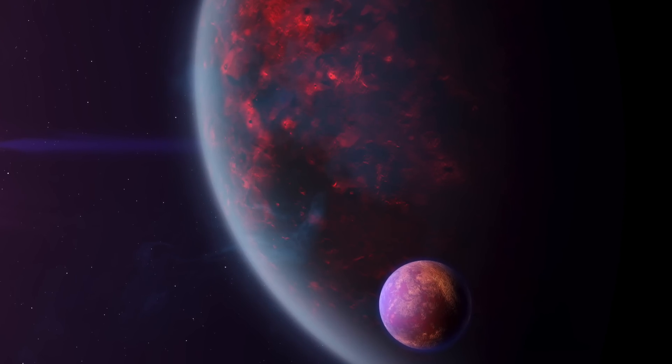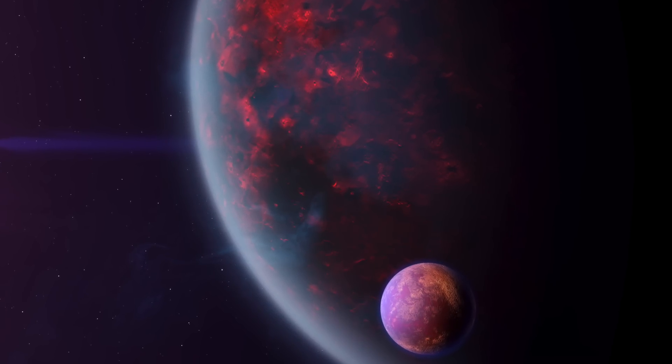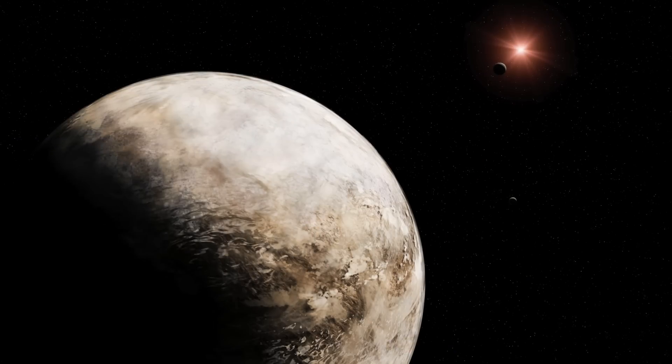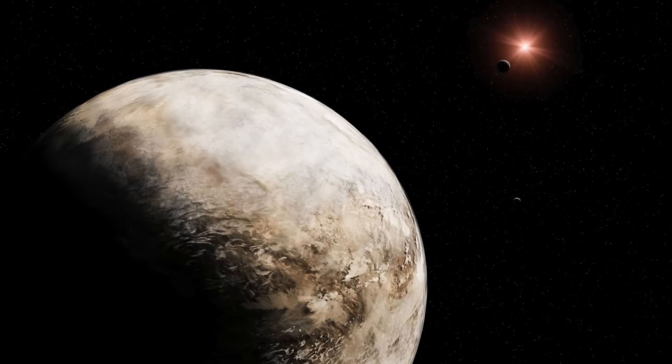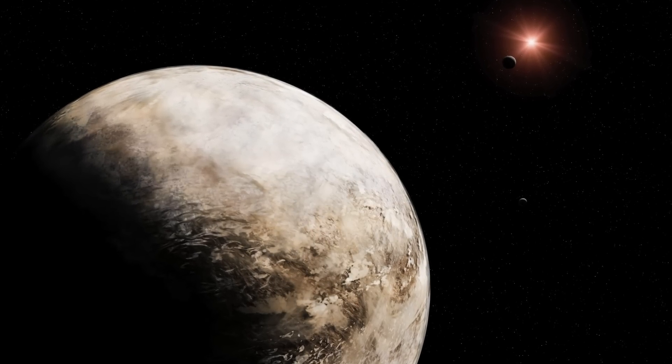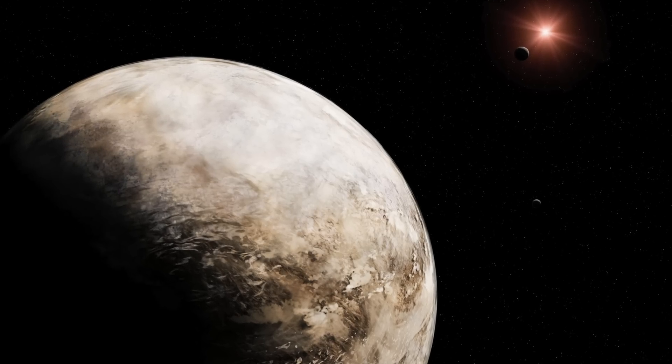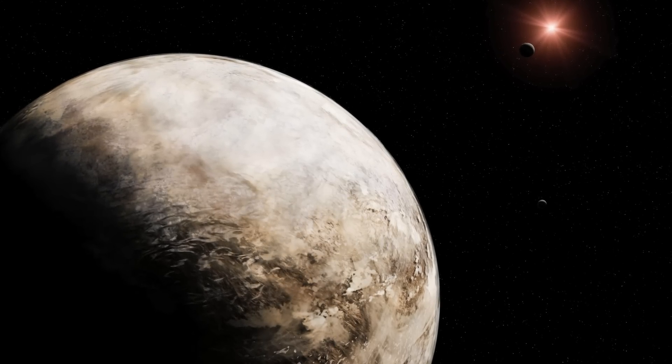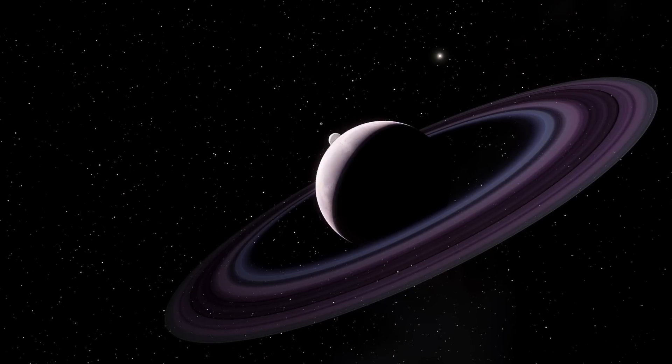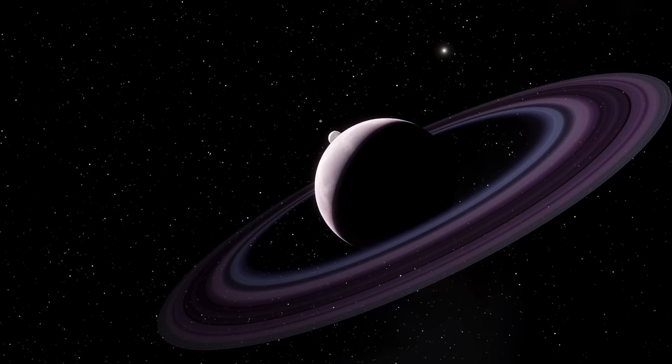When ExoMiner says something is a planet, you can be sure it's a planet. ExoMiner is highly accurate and in some ways more reliable than both existing machine classifiers and human experts it's meant to emulate because of the biases that come with human labeling.